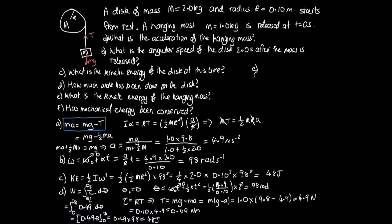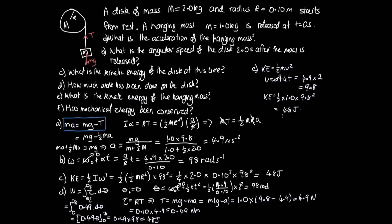For part e, the kinetic energy of the hanging mass is KE = ½mv². Using v = u + at with u = 0, a = 4.9 m/s², t = 2 s: v = 9.8 m/s. So KE = ½ × 1.0 × 9.8² = 48 J.